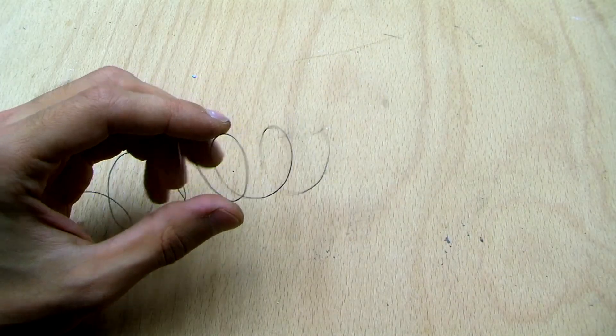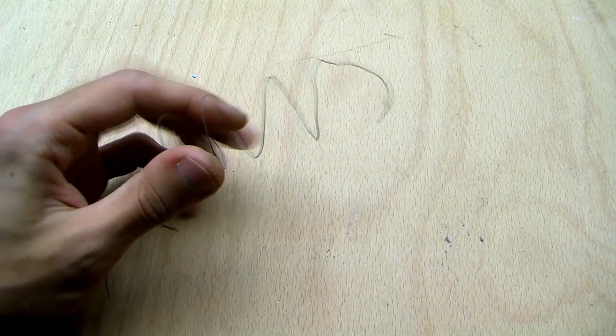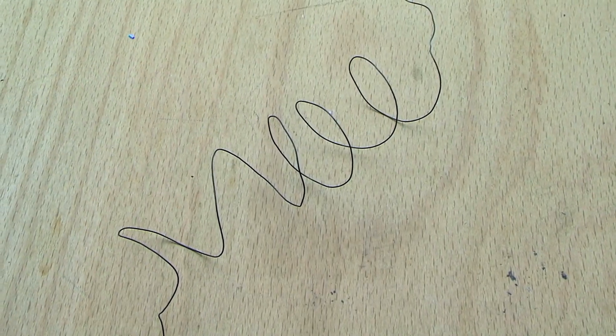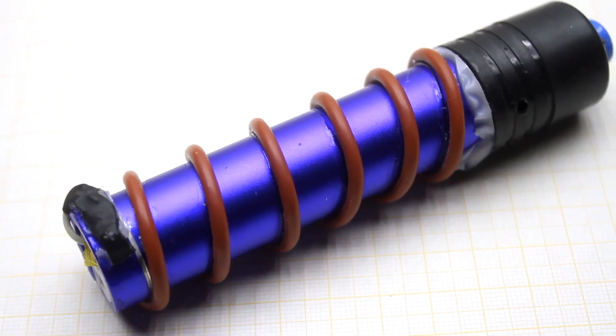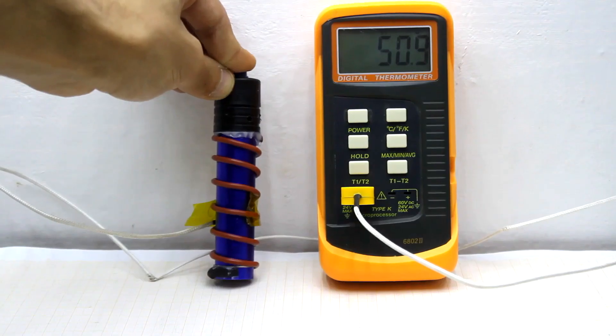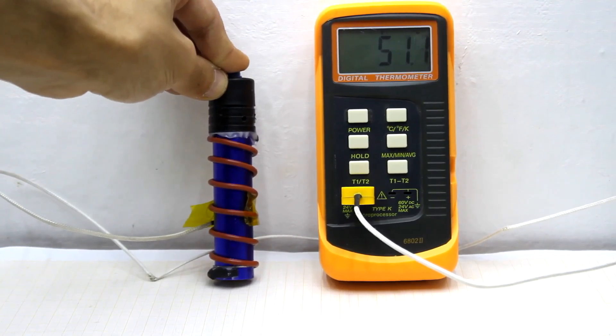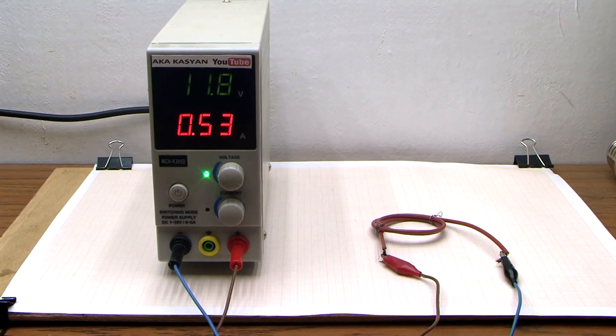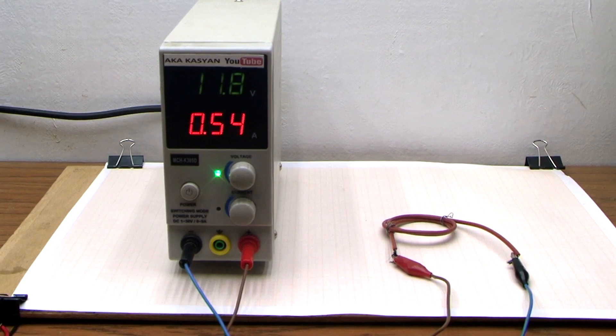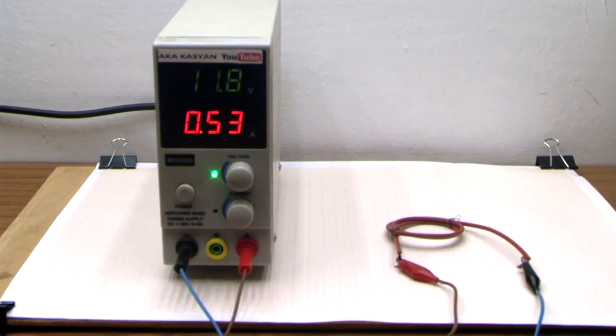The optimum power of the heating element was selected experimentally. For this was used nichrome heater. I wrapped the wire on the aluminum frame of the power bank and powered from 12 volts. Then I picked up the length so that the maximum 20 to 30 seconds the box heated to 50 degrees. Eventually, I found that this requires a heater with a power of 6 watts.